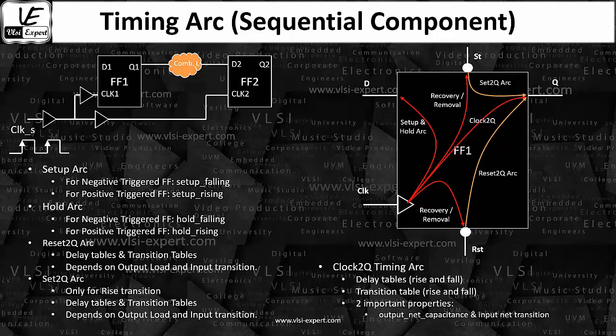The way we are going to define these timing arcs in the dotlib files or the liberty files or the library after the library characterization, that's going to be different. We will not discuss in terms of the unitness. If I will say clock to Q, clock to D, we will say there are timing arcs but it's not about the unitness.